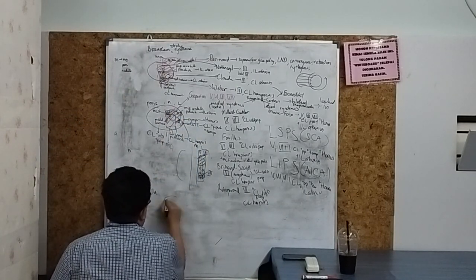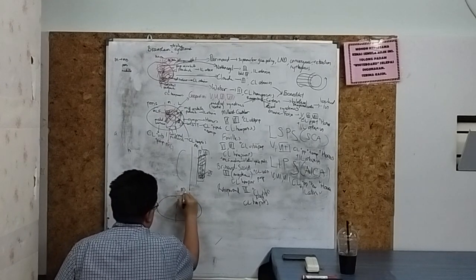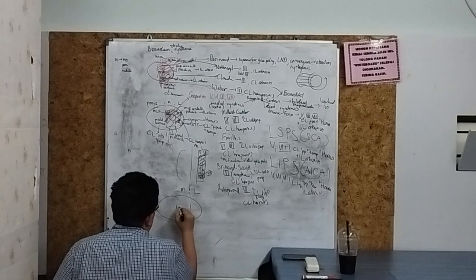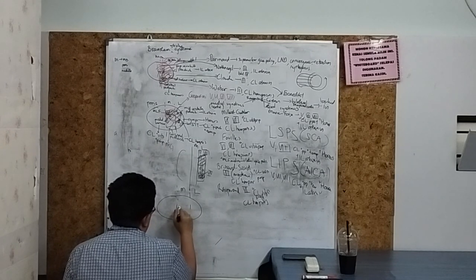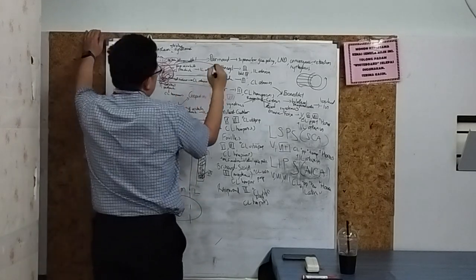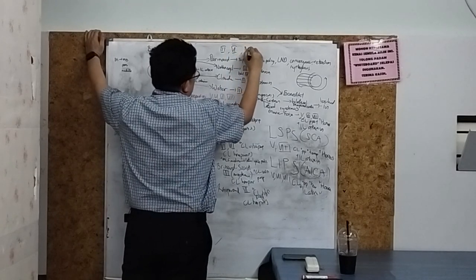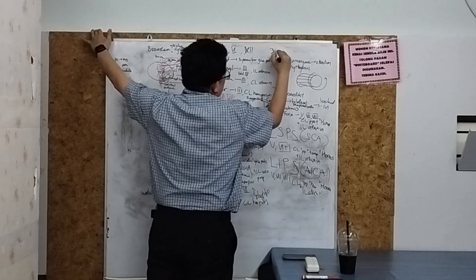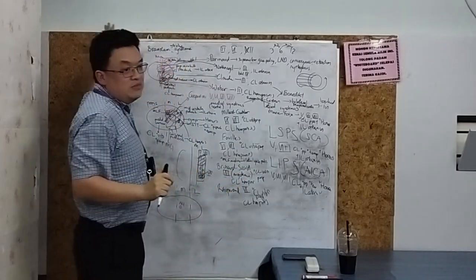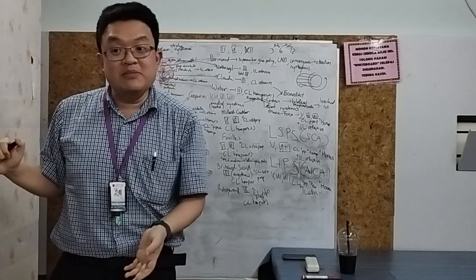In the medulla: the cerebral peduncle gives contralateral hemiparesis; the medial lemniscus gives contralateral loss of vibration and proprioception; the inferior cerebellar peduncle gives ipsilateral ataxia; the sympathetic pathway gives Horner's; and the lateral spinothalamic tract gives contralateral loss of pinprick and temperature. Cranial nerves 9, 10, and 11 (nucleus ambiguus) are located laterally in the medulla.